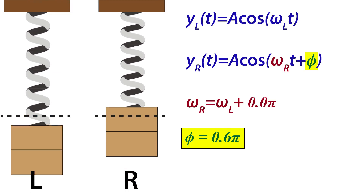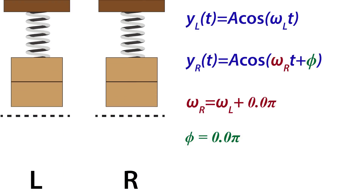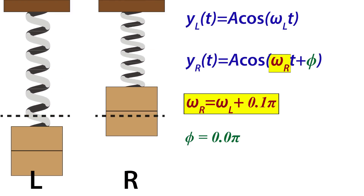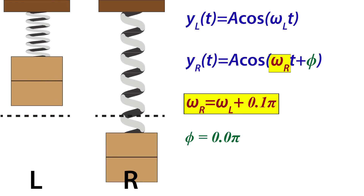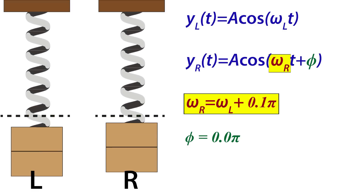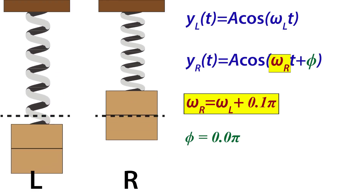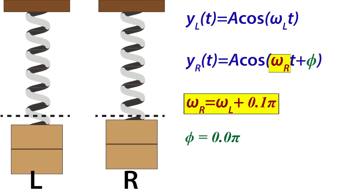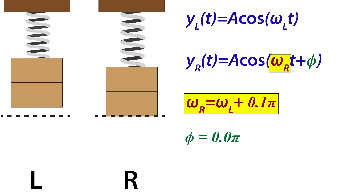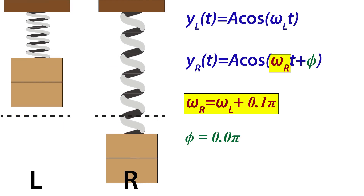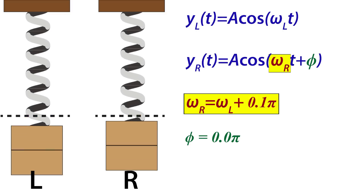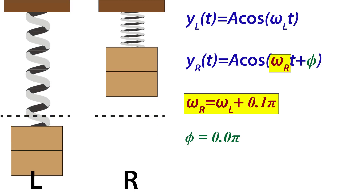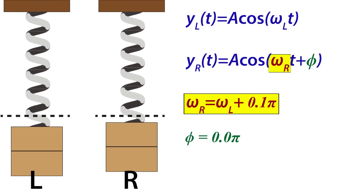If we bring them back in phase and then change the frequency of one oscillator relative to the other, the phase difference between them continuously changes. At one point they may appear almost in phase, then as time goes on the phase difference increases until they appear almost out of phase, then it continues increasing until the phase difference becomes 2π — equivalent to no phase difference — and then repeats. So when two oscillators have different frequencies their phase difference continuously changes with time.